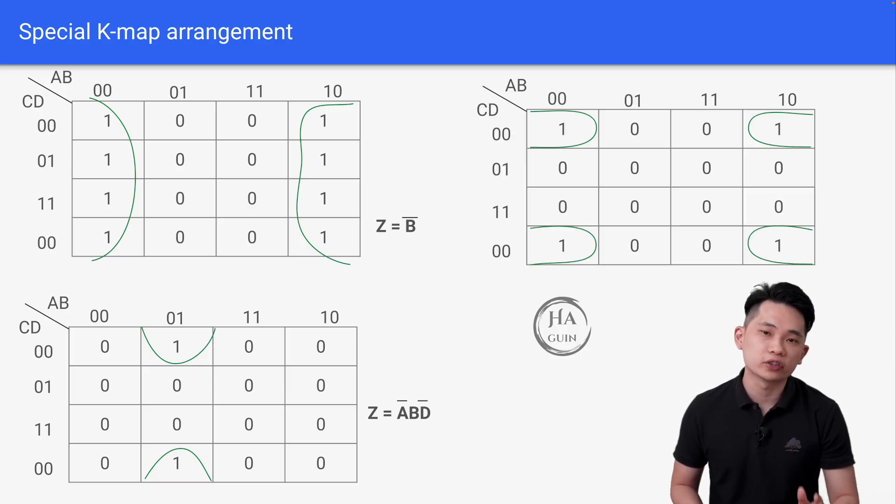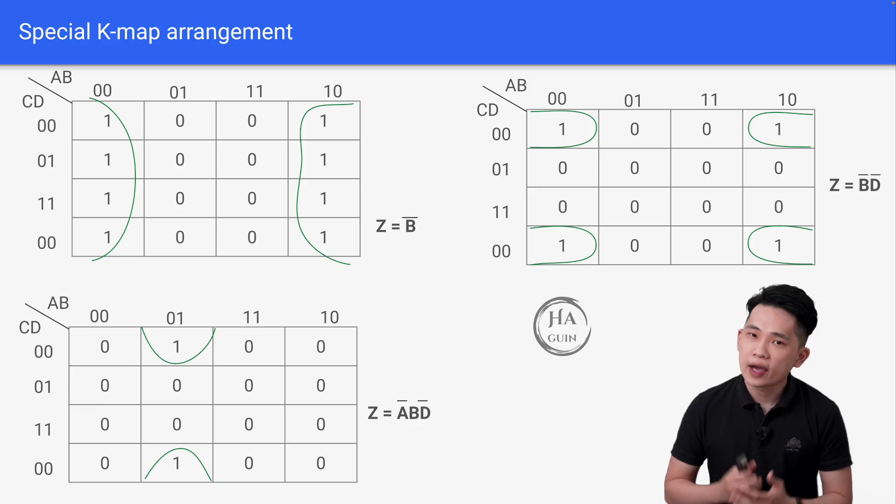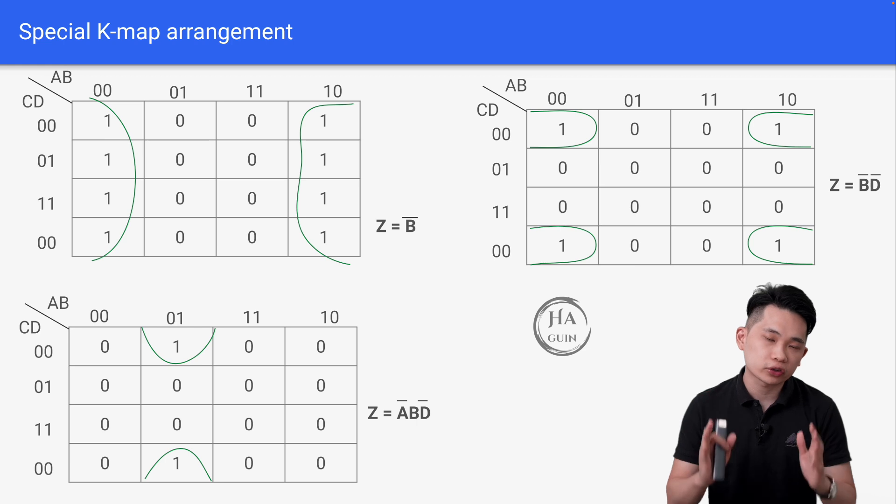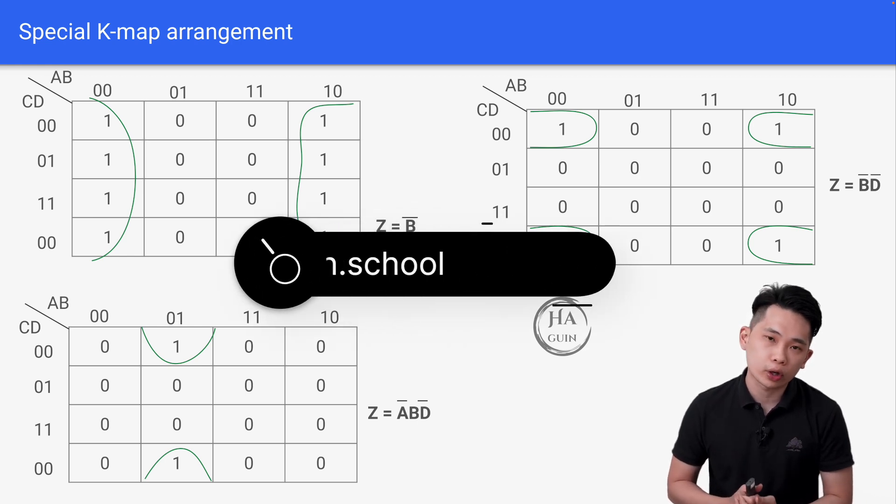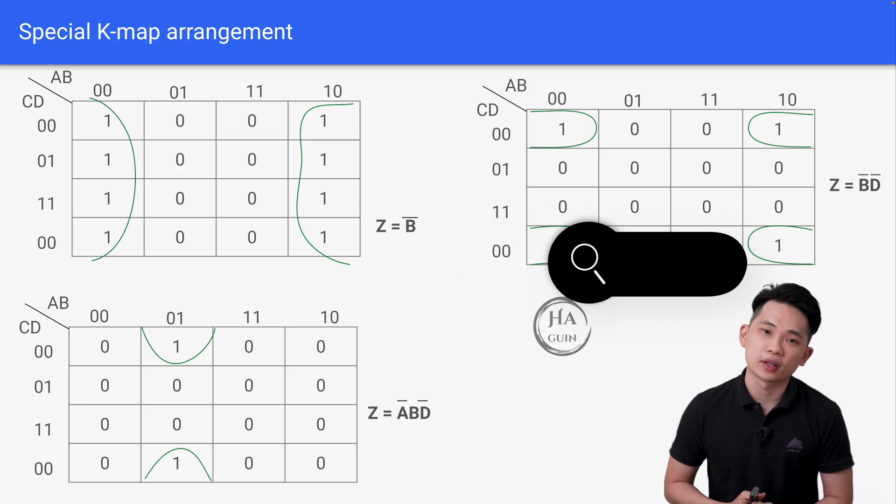Combining all four corners will result in Z equals not B, not D. So that's all about Karnaugh maps. I hope you find this video helpful and it helps you with your studies. If you are eager to dive deeper and master Cambridge O-level computer science in the shortest amount of time, check out my full program at www.headgreen.school. Thank you and I will see you again then. Bye-bye.